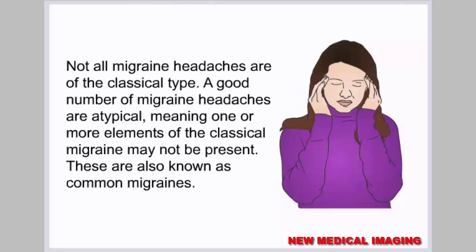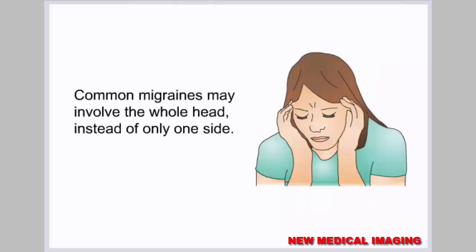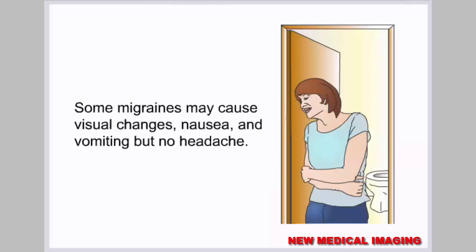Not all migraine headaches are of the classical type. A good number of migraine headaches are atypical, meaning one or more elements of the classical migraine may not be present. These are also known as common migraines. Common migraines may involve the whole head instead of only one side. Some migraines may cause visual changes, nausea and vomiting, but no headache.